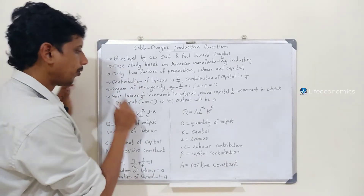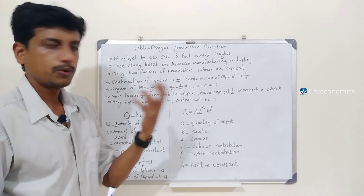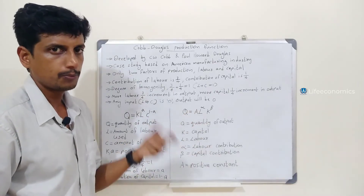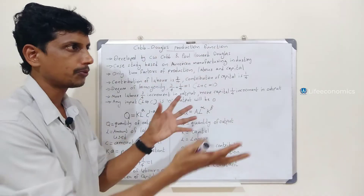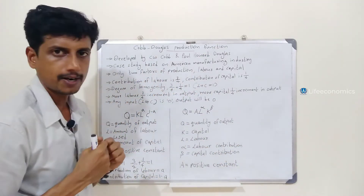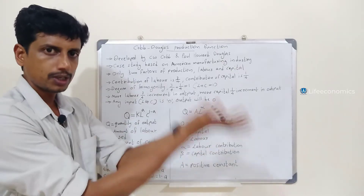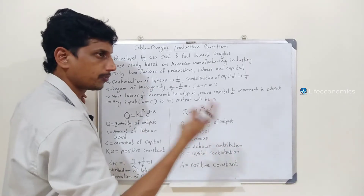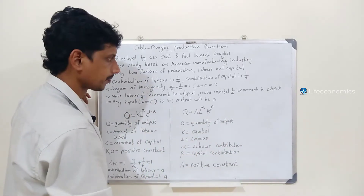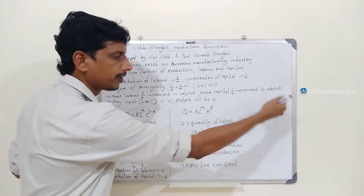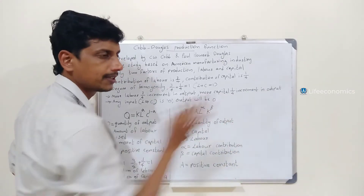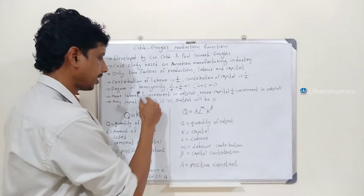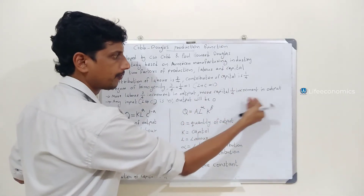If we add more labor, we add 3/4 to the total output as an increment. If we add capital, we add a 1/4 increment. So more labor gives a 3/4 increment, and more capital gives a 1/4 increment to output.